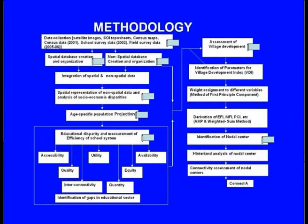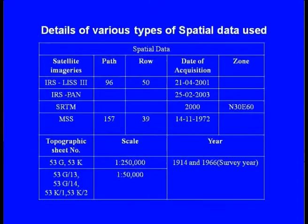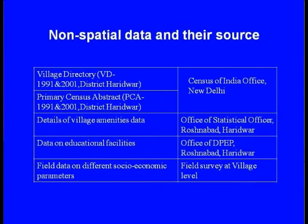For data collection, data is acquired using satellite data, Survey of India topo sheet maps, census maps, census data of 2001, school survey data of 2002, and field survey data of 2005. This slide shows the different types of data used: spatial data consisting of satellite data and topographic data, and non-spatial data including village primary census abstract, details of village amenities, data on education facilities, and field data on different socio-economic parameters.